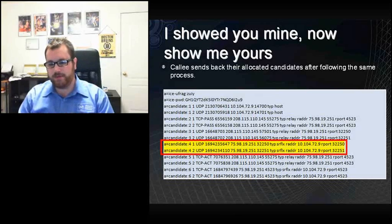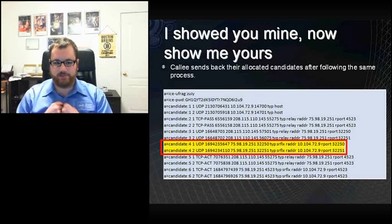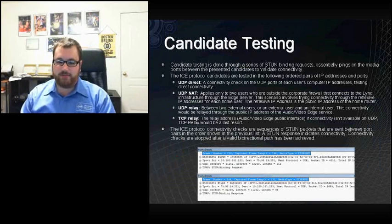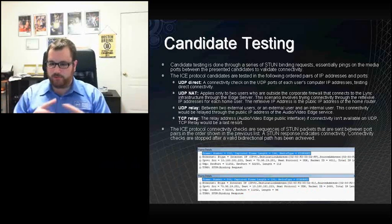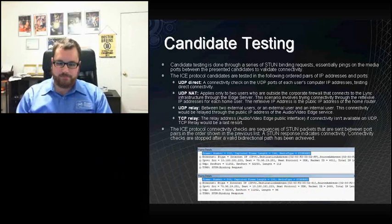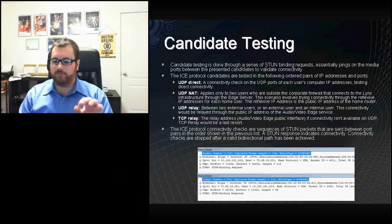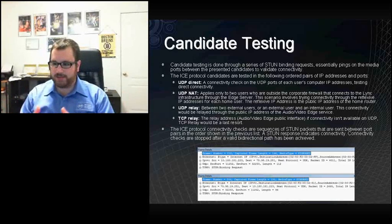Reflexive addresses are very common for external users because they don't require any relaying, and users can almost always connect through home now. Once both candidate lists are exchanged, STUN binding requests are sent — these are packets sent to validate connectivity back and forth, essentially pings on the media port. These go in an ordered pair of priority: UDP direct is the most preferred, then UDP NAT (reflexive) where two users connect via UDP through NAT addresses, then UDP relay, and TCP relay as a very last resort. This is why VPN clients with link are a problem — if you're connected to VPN, you have an internal interface IP that's UDP, which is the highest priority, so that's why VPN addresses get selected.